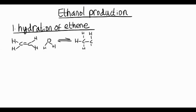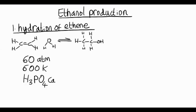Now, the conditions for this equilibrium reaction are 60 atmospheres pressure, which drives the equilibrium to the right because there's less moles of gas on the right-hand side. We use 600 Kelvin temperature and a phosphoric acid catalyst that has a formula H3PO4.